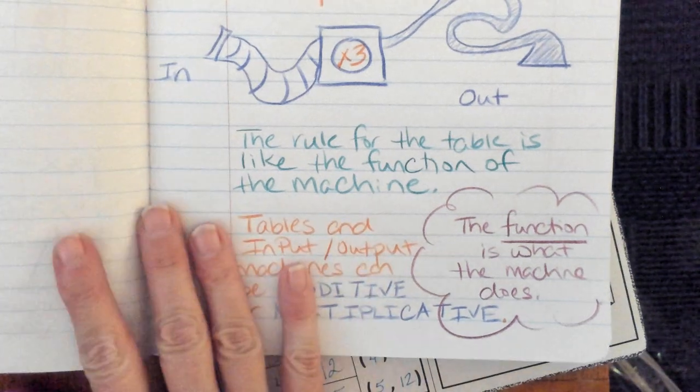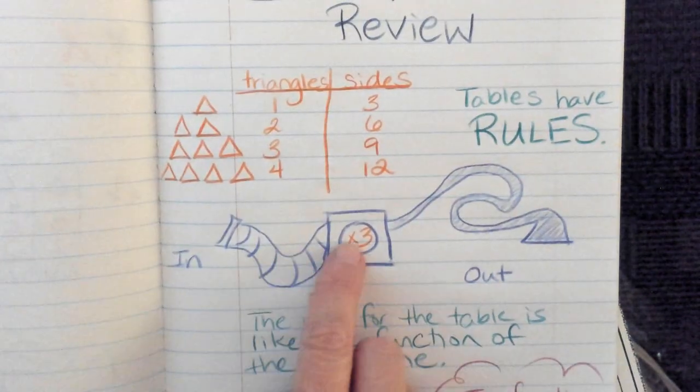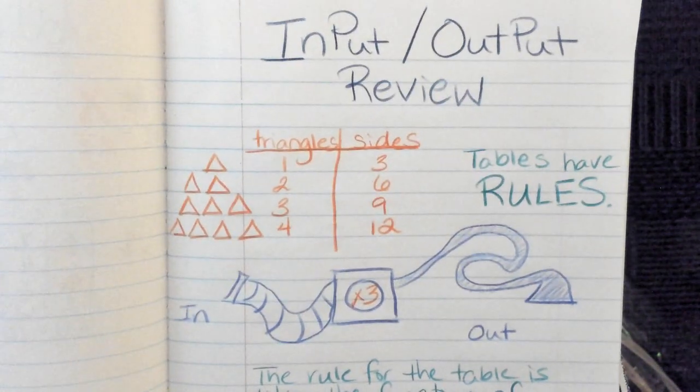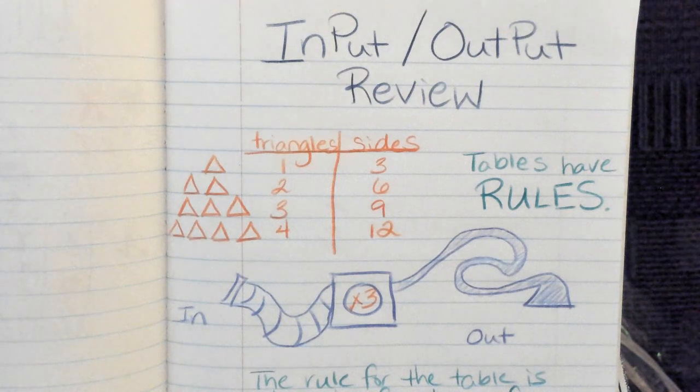So, like, in our example here, this is a times three machine, so we're multiplying, so this is a multiplicative machine. And that is your review of input-output.